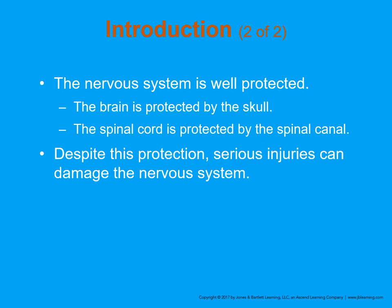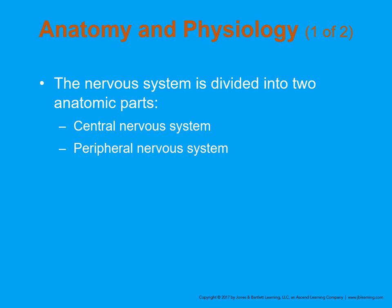The brain is protected well because it's encased in the skull. The spinal cord is protected while it's in the spinal canal, but despite its protections, sometimes serious damage can occur. The nervous system is divided into two anatomical parts: the central nervous system and the peripheral nervous system.